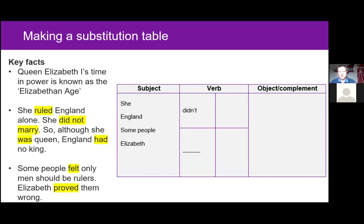Next we move to the verbs — the ones we've previously highlighted. Most of them are one-word verbs such as ruled, felt, approved, but there is also the negative construction 'did not discover.' We're going to shorten it to 'didn't' to make it easier for our EAL learners. In this case, I'm imagining I'll use this table for a spoken activity, so it's appropriate to use a more informal register with contractions. But if it was for writing, I might keep it as 'did not.'